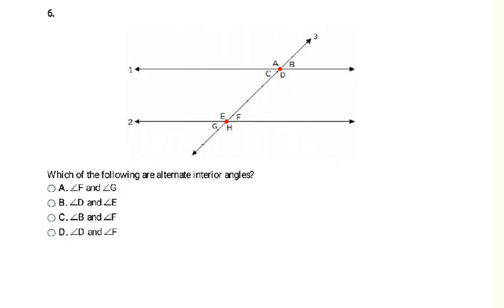Which of the following are alternate interior angles? The interior angles are C, D, E, and F. I need two angles on opposite sides of the transversal: C and F, or E and D. The pair listed in the answer is B: D and E.